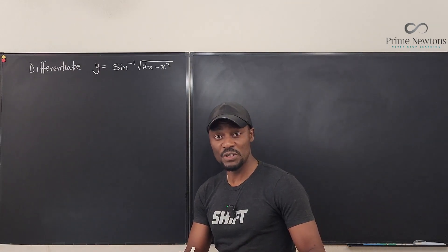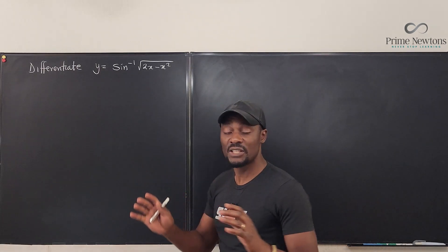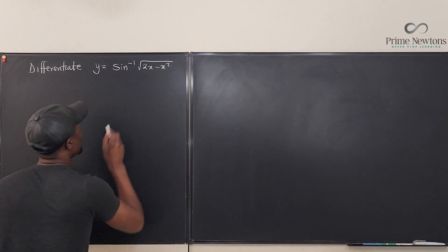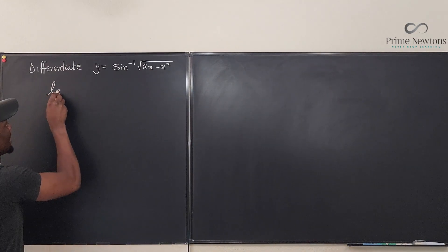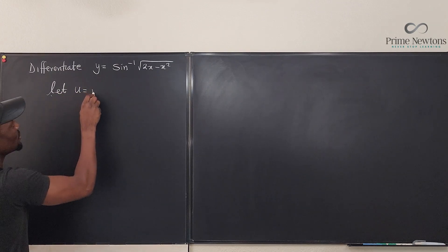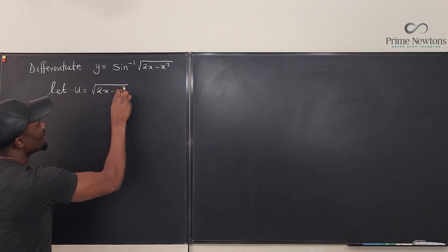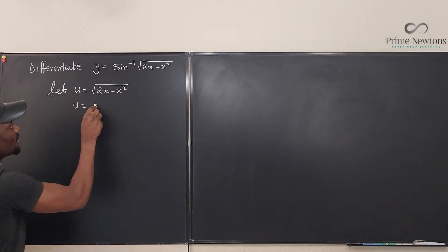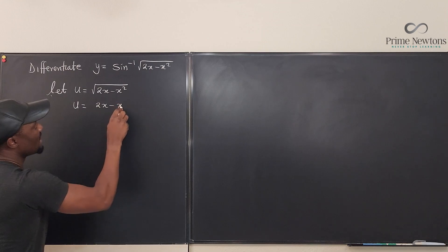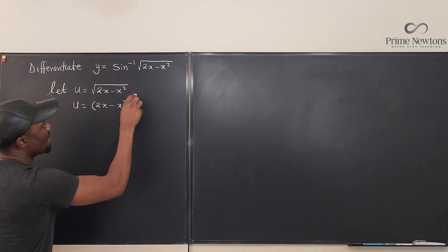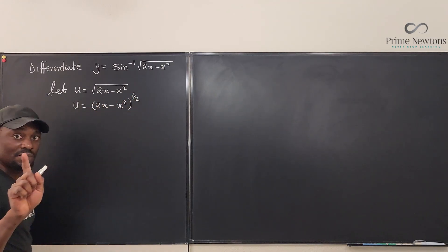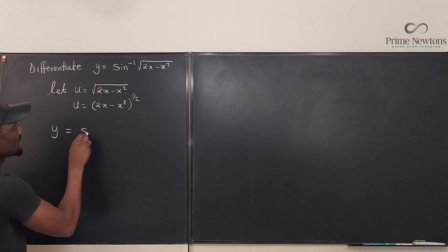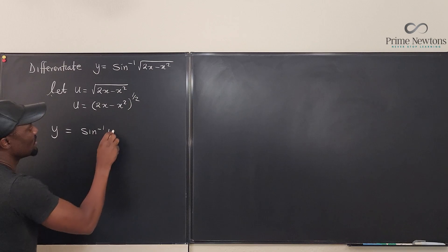The first thing we're going to do is make this function less complicated. So let's break it down and say that we're going to make this argument. We're going to say let u be equal to the square root of 2x minus x squared. And we can write this as u equals 2x minus x squared to the 1 half. Therefore, this entire problem y is just inverse sine of u.